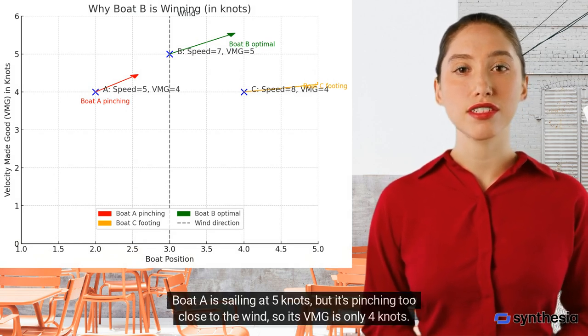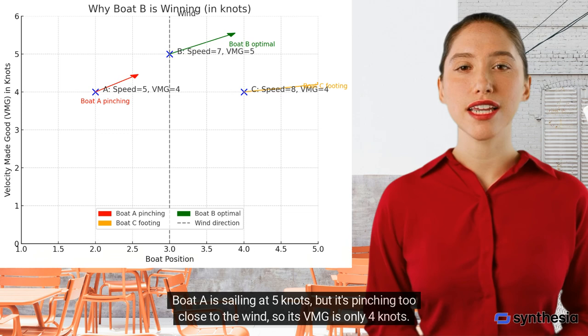Boat A is sailing at 5 knots, but it's pinching too close to the wind, so its VMG is only 4 knots.